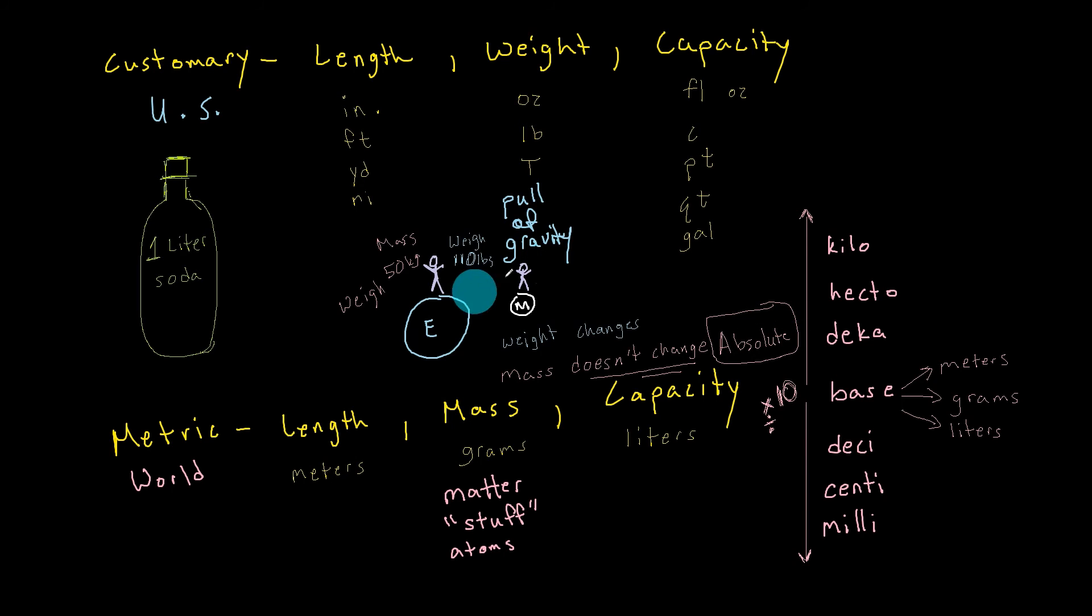However, weight does change. If you are 110 pounds on the earth, then you're going to be lighter on the moon. It's not that you have changed in weight; it's that the gravity is different on earth than it is on the moon. Therefore, since the gravity is different on the moon compared to the earth, your weight's going to be different.